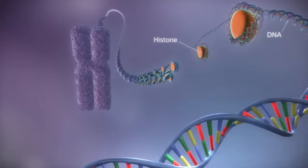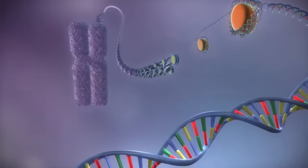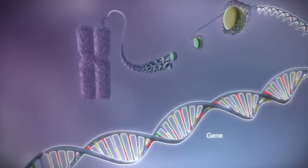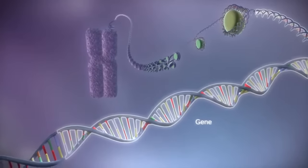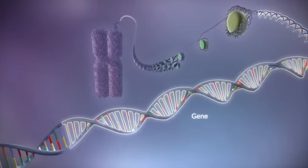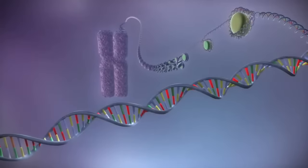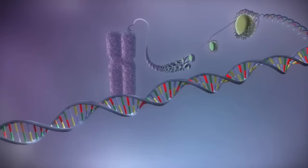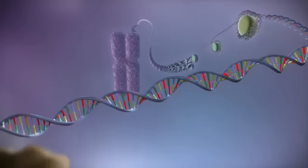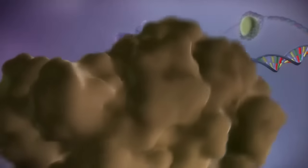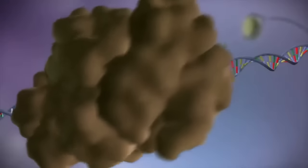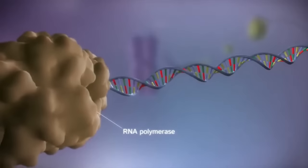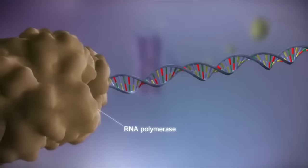Within the DNA are sections called genes. These genes contain the instructions for making proteins. When a gene is switched on, an enzyme called RNA polymerase attaches to the start of the gene.